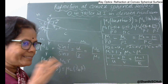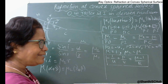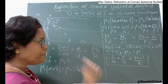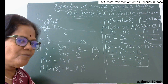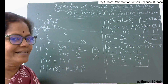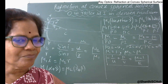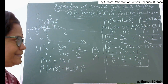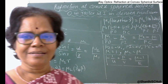So the refraction through a convex spherical surface gives the same final expression whether the image is real (object in rarer medium, image in denser medium) or virtual (object in rarer medium, image in rarer medium). For real image: +mu2/PI; for virtual image: −mu2/PI — but after substituting sign conventions, both cases yield the same formula. Hope you understand this. Thank you.